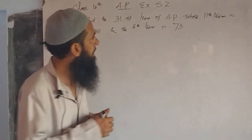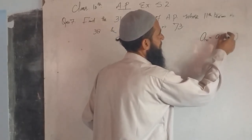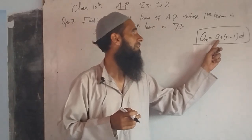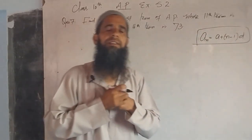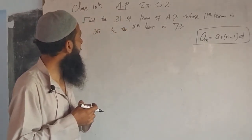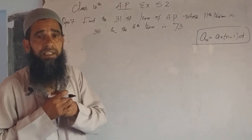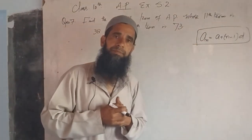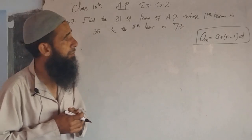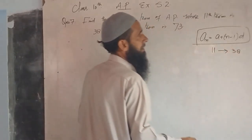As we know, the nth term — that is a_n — is equal to a plus (n minus 1) into d. Using this formula we can find the value of any term. Here, the first term 'a' is not available and the common difference 'd' is also not available, but we do have the 11th term and the 16th term.